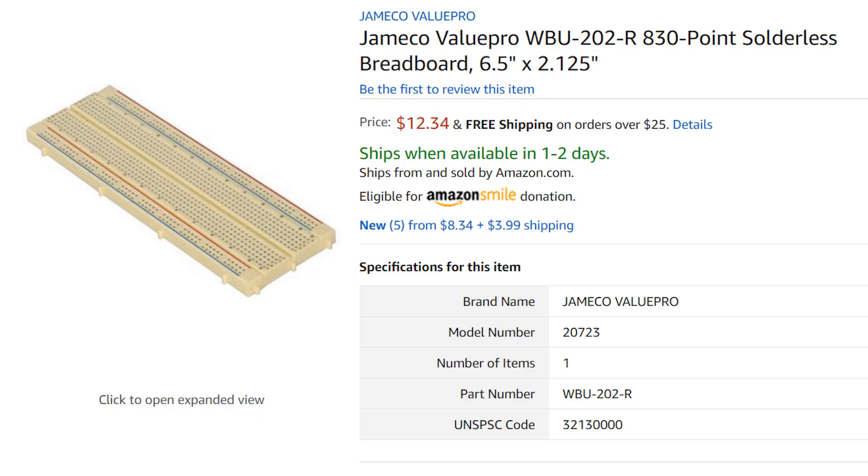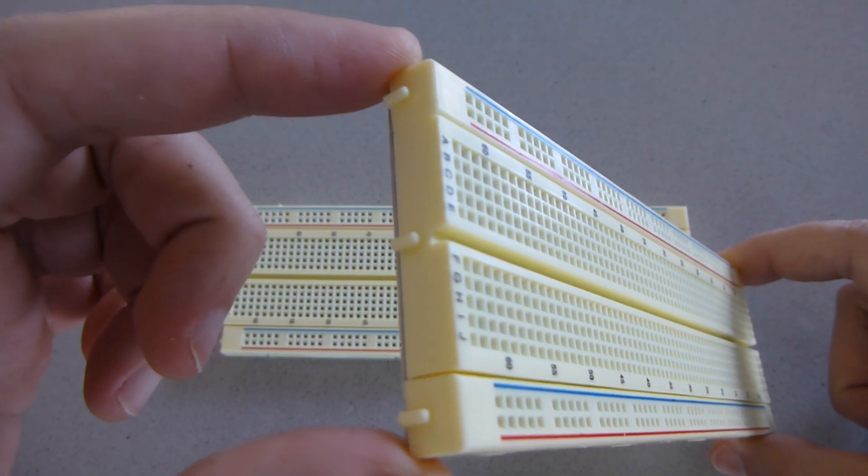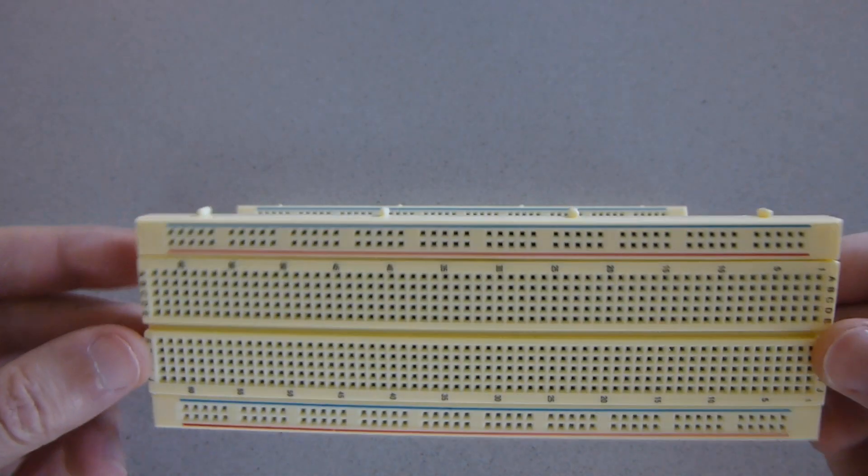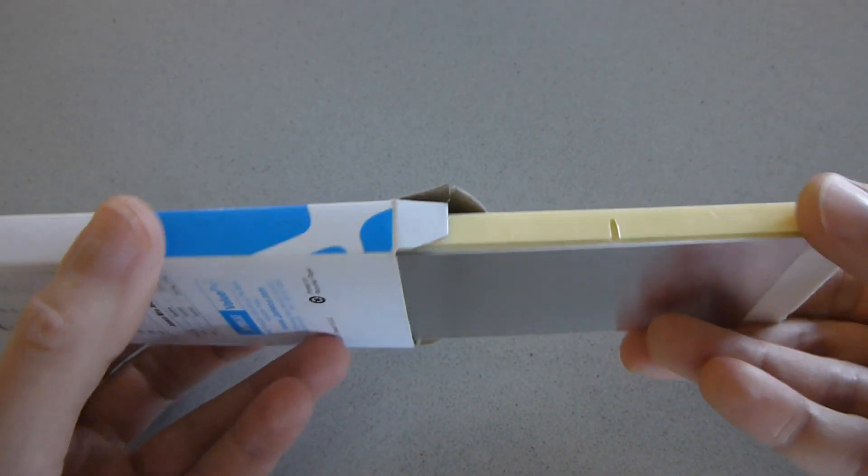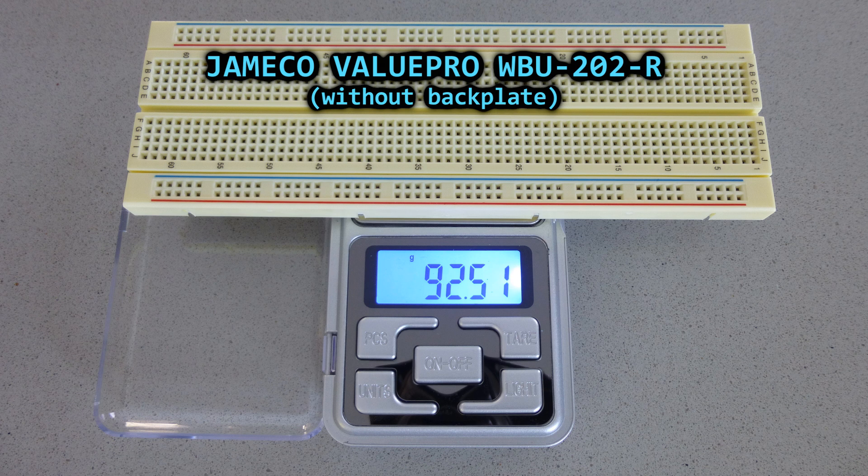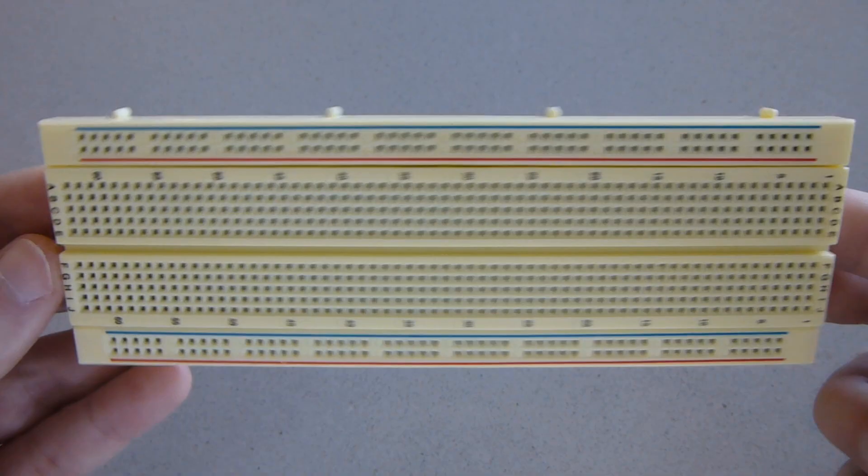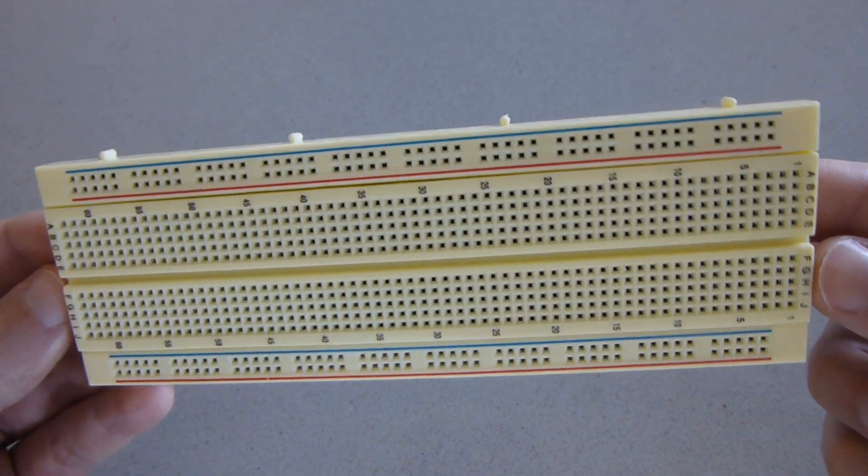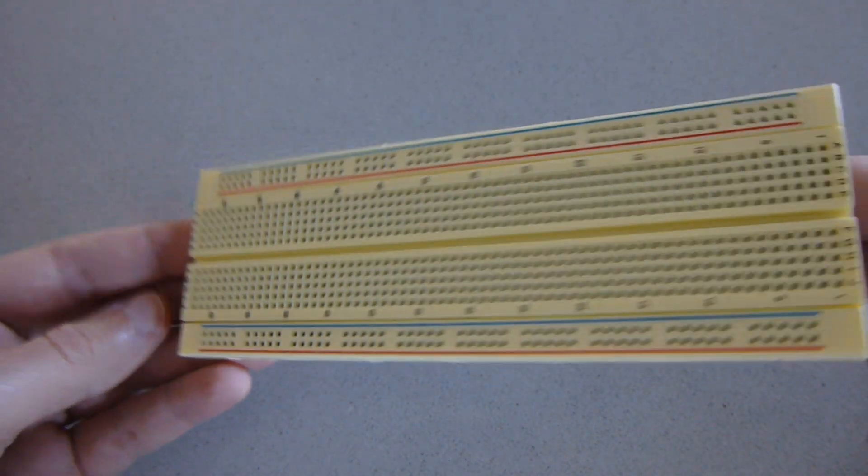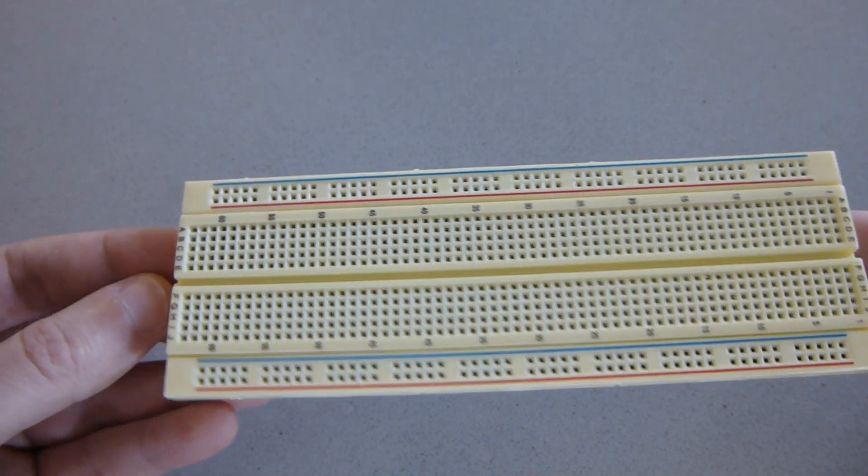The last on my list, meaning is the best in my opinion, is the Jameco ValuePro WBU-202-R. Surely it's a bit better with the option to stack breadboards in any direction, with a great backplate, and is the heaviest of all the breadboards I tested. But at almost double the price compared to the previous one, I'm not sure it's worth the extra money. Maybe it's going to last longer, or who knows.